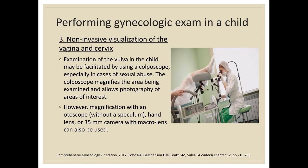We can also use a colposcope in the examination of the vulva in the child, especially when we suspect cases of sexual abuse. The colposcope can magnify the area being examined and allows photography. Alternatively, magnification using an otoscope or ophthalmoscope without a speculum, a hand lens, or a 35mm camera with a macro lens can also be used.